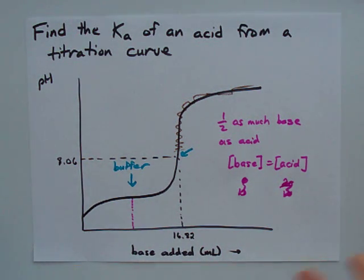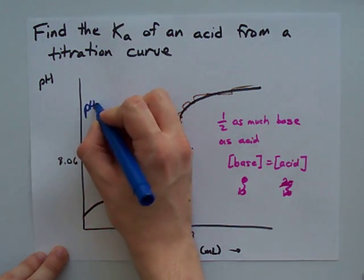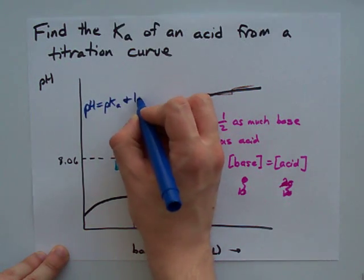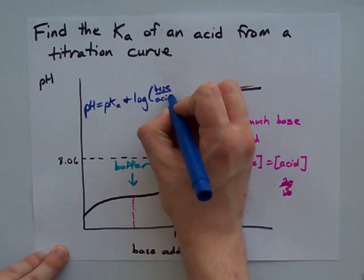Now, the greatest part about the buffer region is we have a special equation called the Henderson-Hasselbalch equation. pH equals pKa plus log concentration of base over acid.